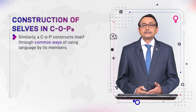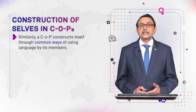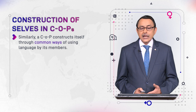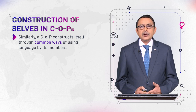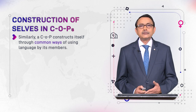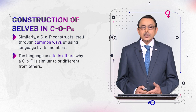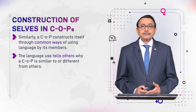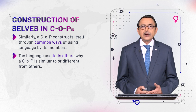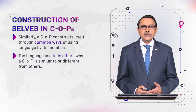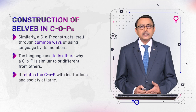A COP constructs itself through common ways of using language by its members. In the case of individuals, there was a joint goal. For COPs, what keeps them unified is the uniform use of language. That language use tells others why a COP is similar to or different from others — the language of doctors, engineers, and academics would all be different, and their language indicates their COP, their social group.